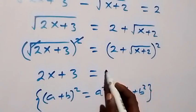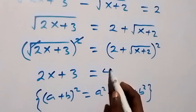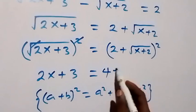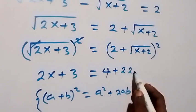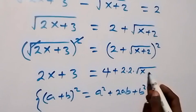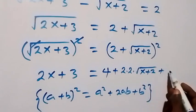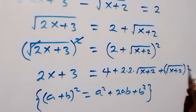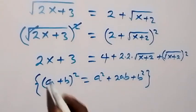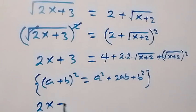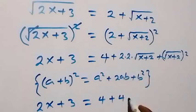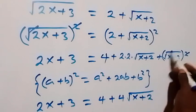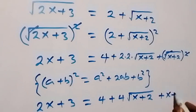The square cancels the square root on the left, giving us 2x plus 3. Applying the expansion to the right side: 2 squared is 4, then plus 2 times 2 times square root of x plus 2, then plus square root of x plus 2, all squared.